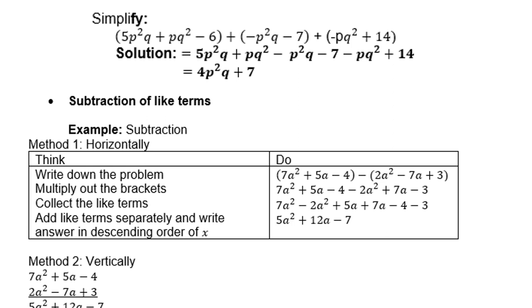With subtraction, there's also two methods possible. Either we write it down horizontally next to each other. But then remember, with the second bracket, all the signs inside the brackets must change. Like 2a squared becomes negative 2a squared. Negative 7 becomes plus 7. And plus 3 becomes minus 3. Then you collect your like terms and add. Or vertically, like method 2. But you must remember now that the subtractor, the 2a squared becomes negative 2a squared. Then you add 7 and minus 2 gives you 5. The minus 7 becomes a plus 7, and you add. 5 plus 7 is 12a. And the plus 3 becomes a negative 3. Then negative 4 and negative 3 is negative 7.